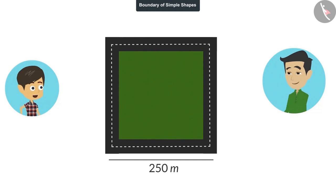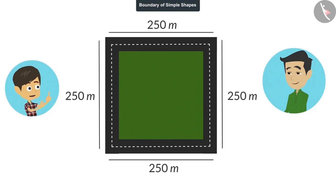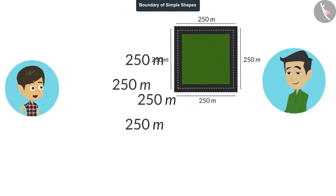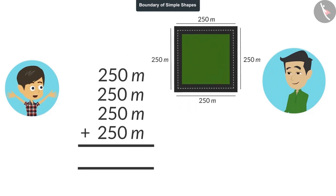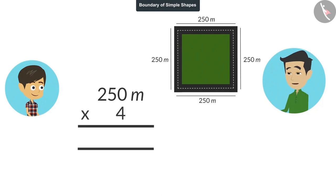Papa, it is a square shape. That means all its sides will be 250 meters each. Now we add these 4 sides. Wait, Rayanj. What happened, Papa? Instead of adding the same number 4 times, it is better to multiply this number by 4.